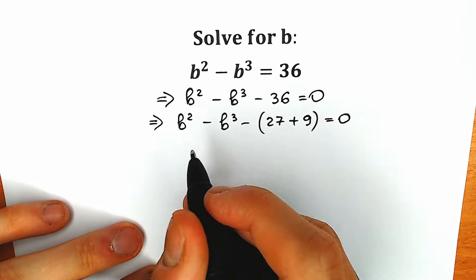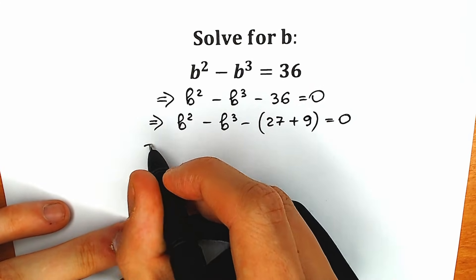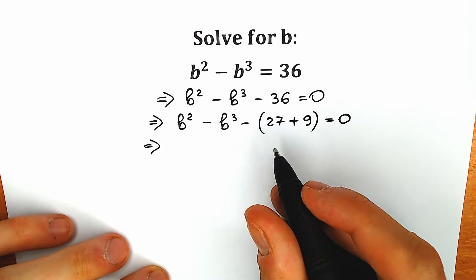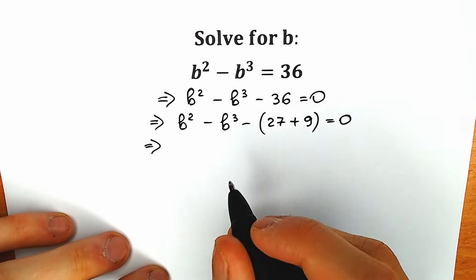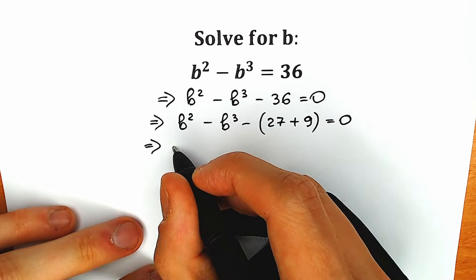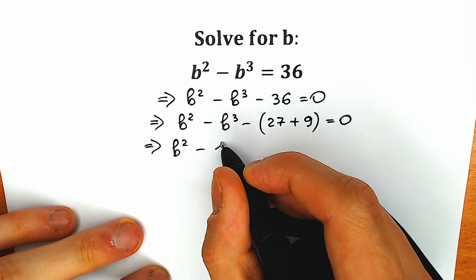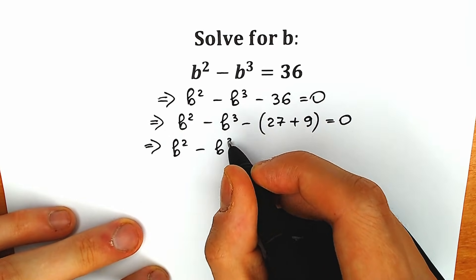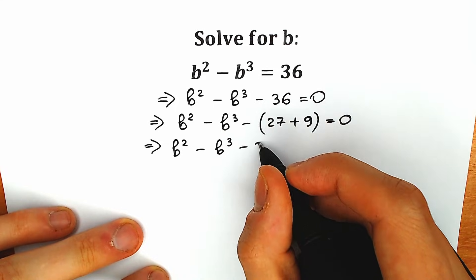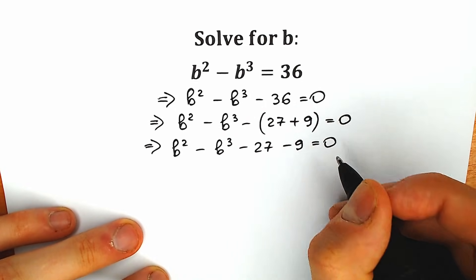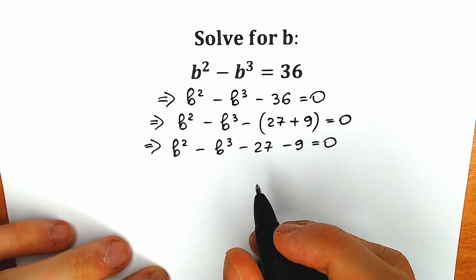Now let's open the parenthesis and write it without parentheses, but we need to change the sign to the opposite one. So we have b squared minus b cubed minus 27 and minus 9 equal to 0.